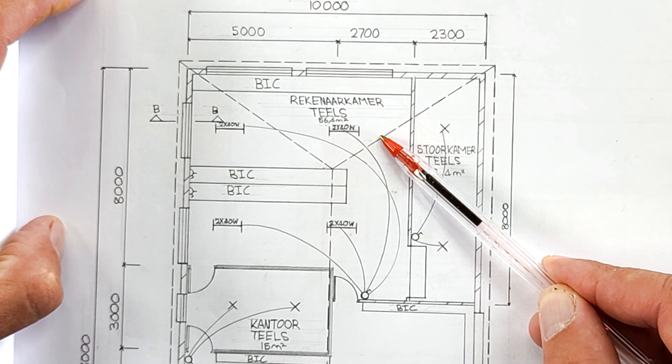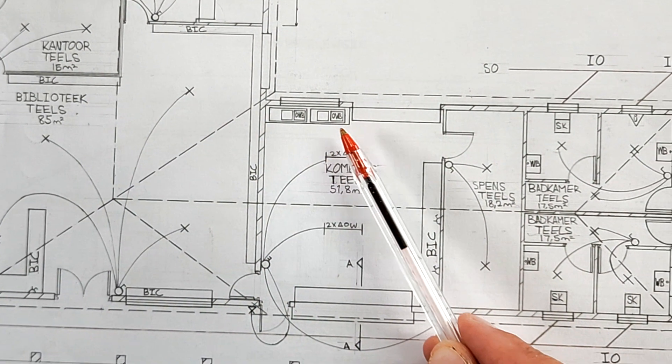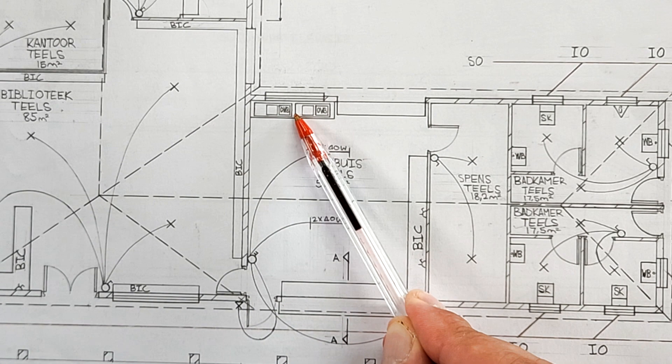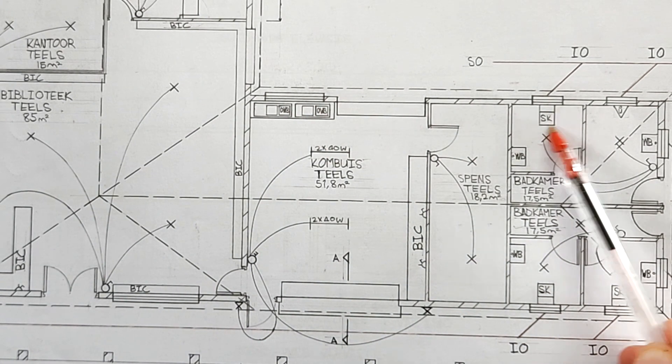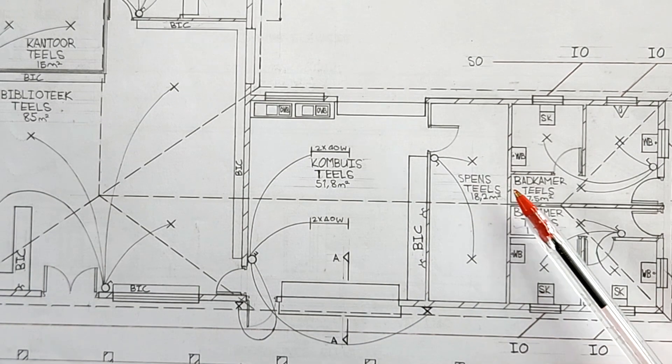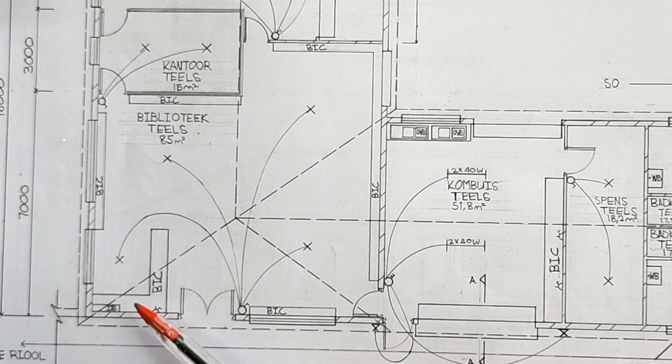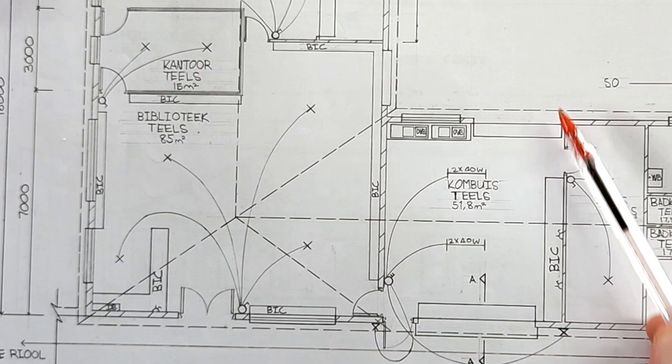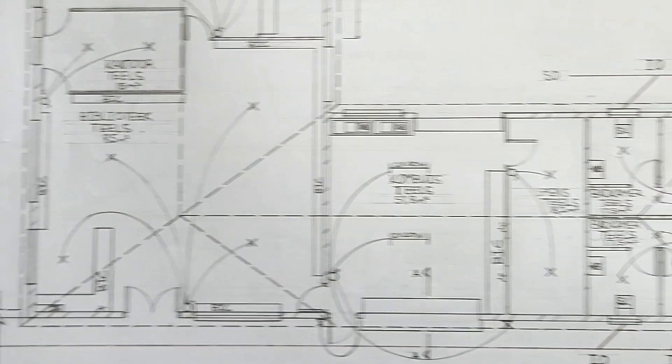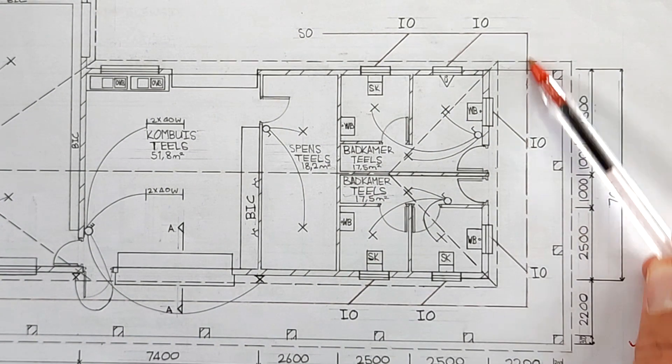It also requires you to do all your permanent fixtures: your kitchen sinks, your built-in toilets, your wash basins, all the built-in cupboards, the reception desk if that's a requirement—all of that needs to be included.